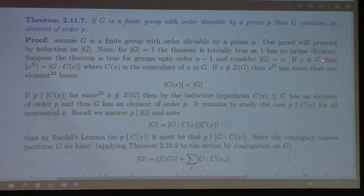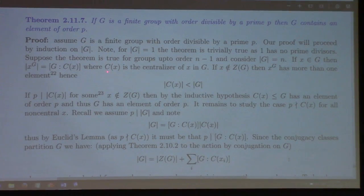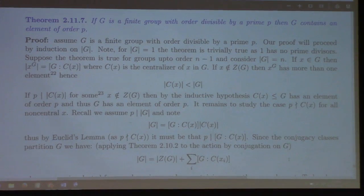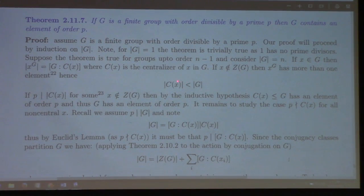Suppose you've got a finite group of order N, and suppose the theorem holds for groups up to order N−1 — strong induction. Suppose you've got an element x of G. The conjugacy class of x equals the index of the centralizer. Now the centralizer is a subgroup. If G is not abelian, so there's no non-identity element in the center, then the centralizer of x is a proper subgroup of G, and hence its order is smaller than G.